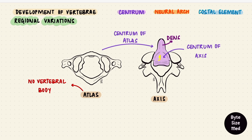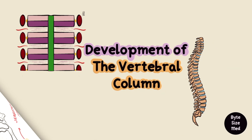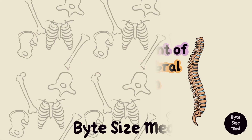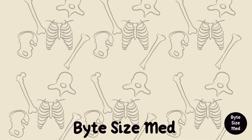Axis, however, has two centra. One centrum forms the body, and the other — fused with the centrum of atlas — forms the dens. Thus between the two there is no intervertebral disc. And that is how vertebrae develop; together they form the vertebral column. I hope this video was helpful. If it was, you can give it a like and subscribe to my channel. Thanks for watching, and I'll see you in the next one.